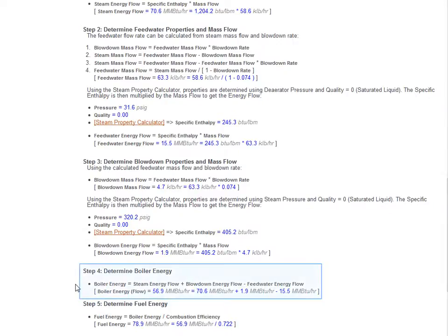The required boiler energy is then calculated as the difference between the feed water energy content and the combined energy content of the steam and blow down. The required fuel energy is then determined by using the combustion efficiency and required boiler energy.